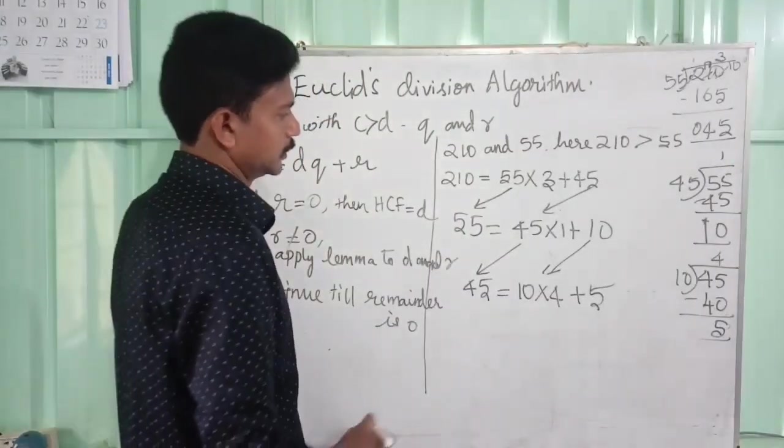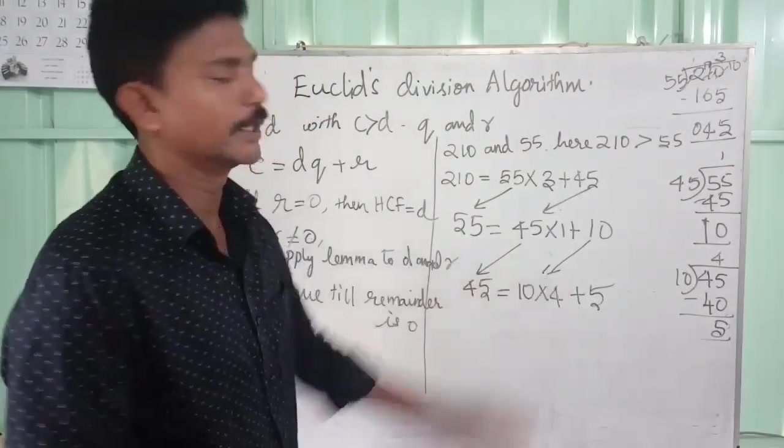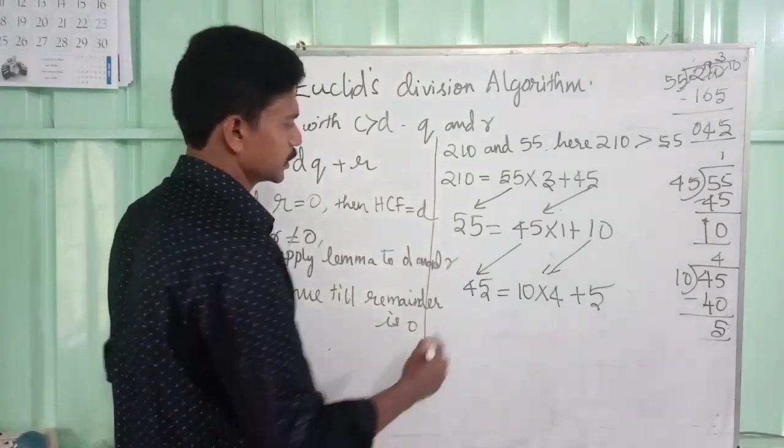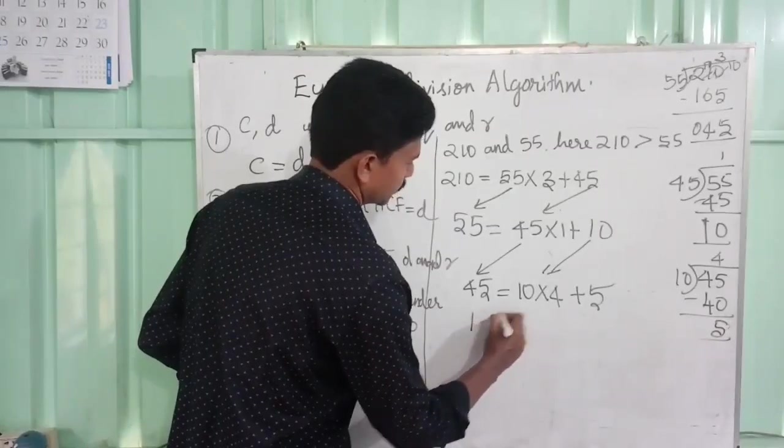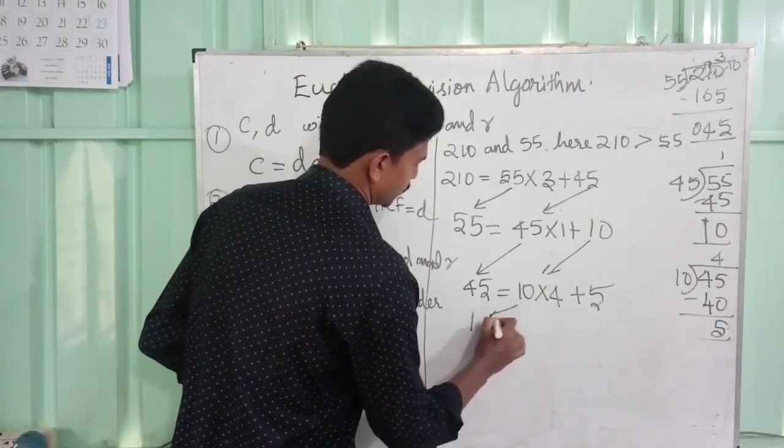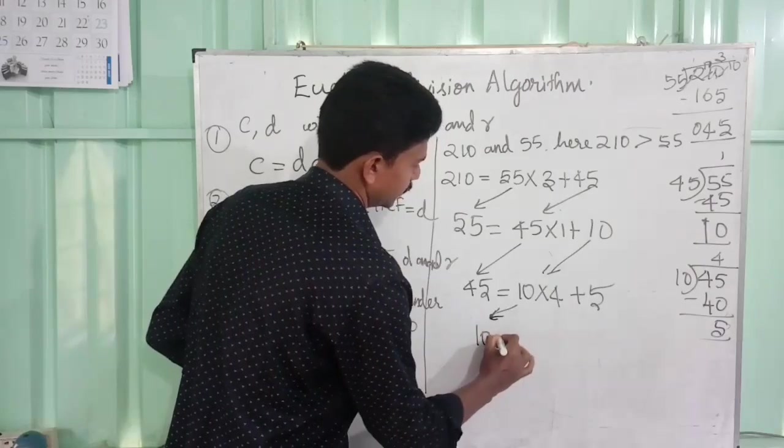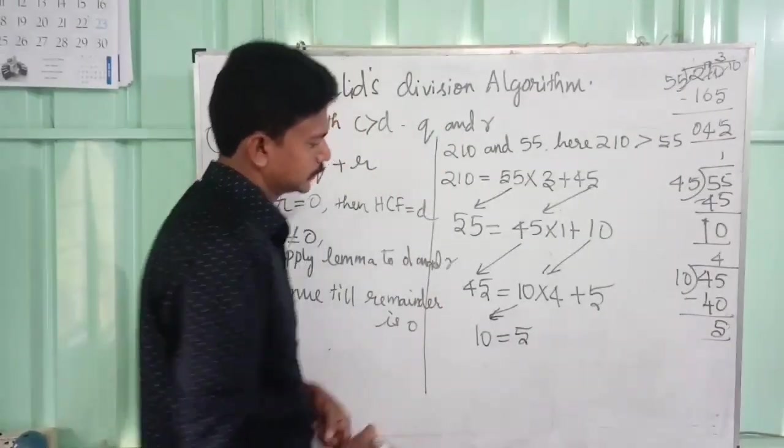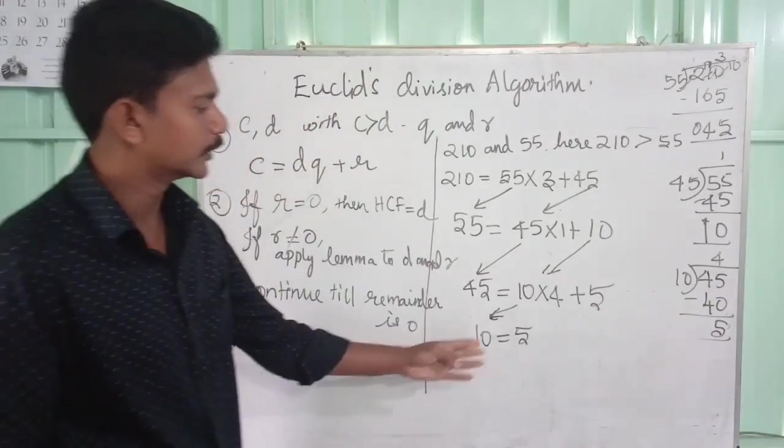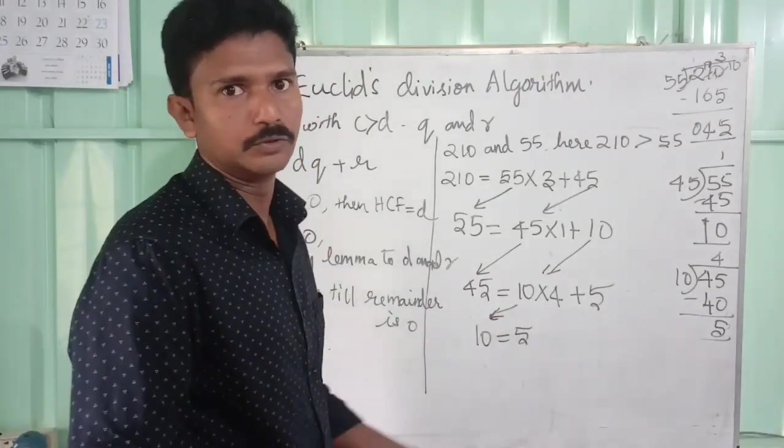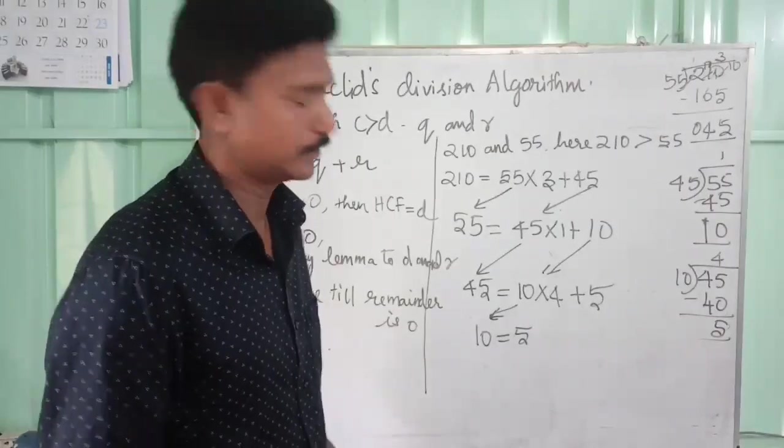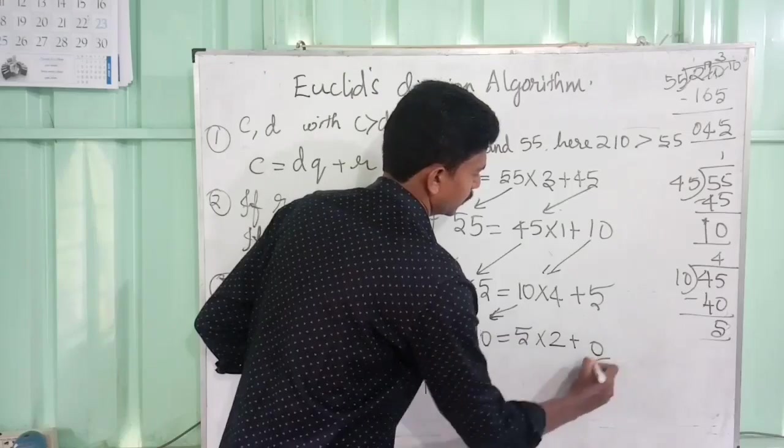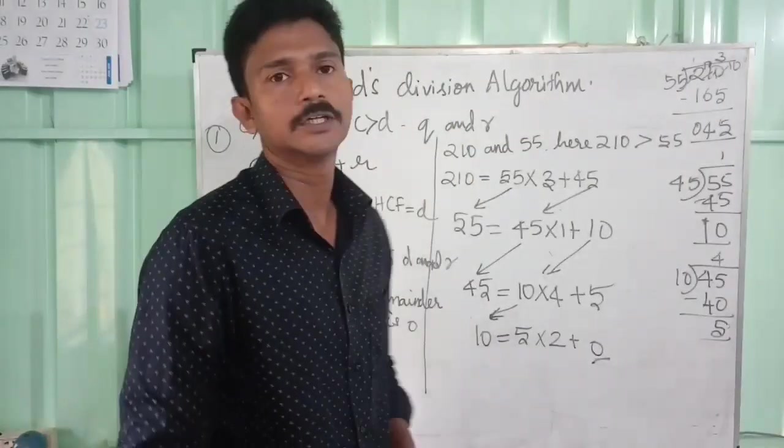Again, now you see that the remainder is not 0. So we have to continue this process. We take the divisor 10 and divide by 5. When you divide 10, we know that there are 2 fives in 10. 5 times 2 is 10. So there is no remainder. Now we got the remainder is 0.